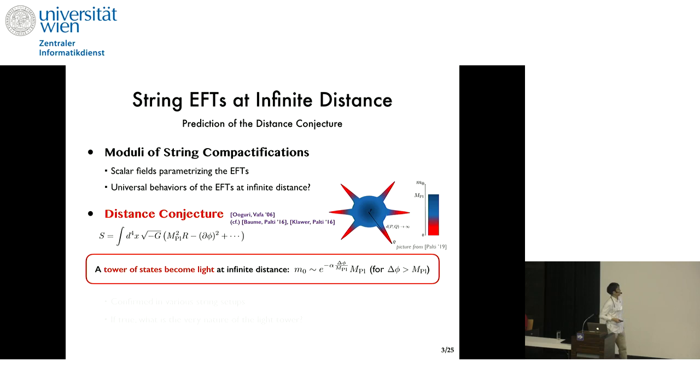Both of them concern the moduli space of EFTs, or for the current purpose, the moduli of string compactifications. So the conjectures characterize universal behaviors of the EFTs at infinite distance in the moduli space, as we deform the compactification geometry towards the asymptotic boundary. Now, the distance conjecture claims that a tower of states should become light at infinite distance, in this exponential fashion for some constant alpha. And one can also imagine adding in cosmological constant, but this talk will focus on Minkowski.